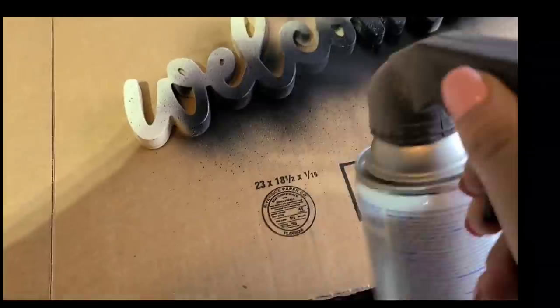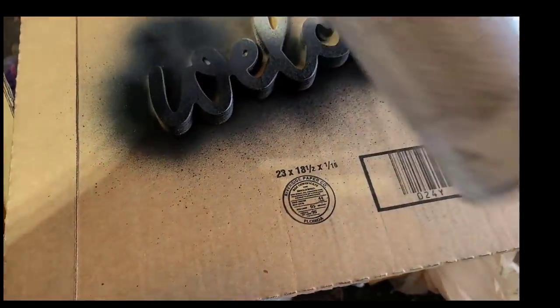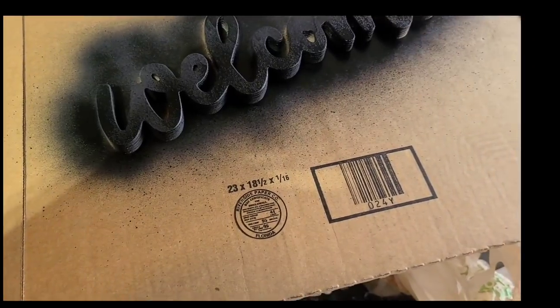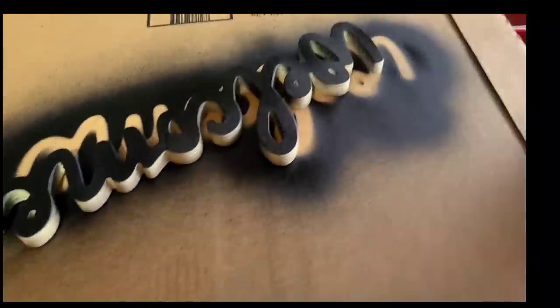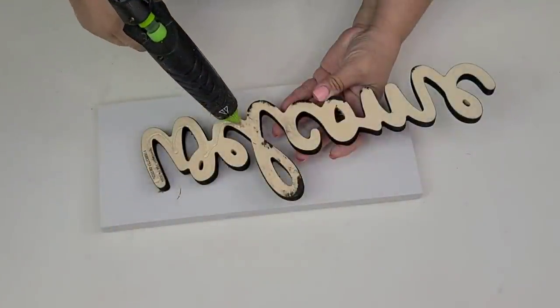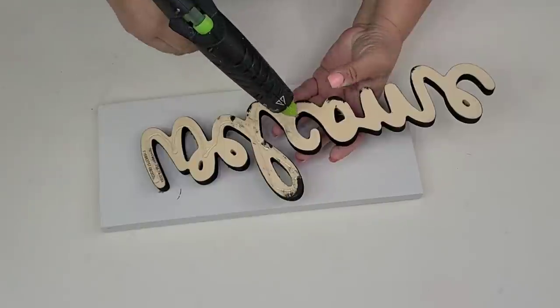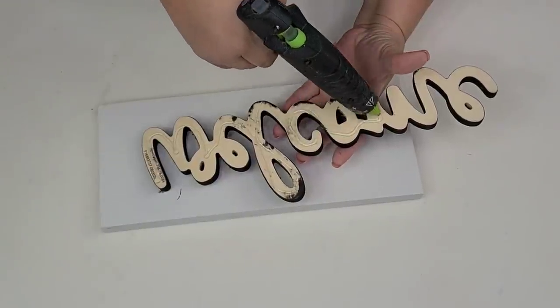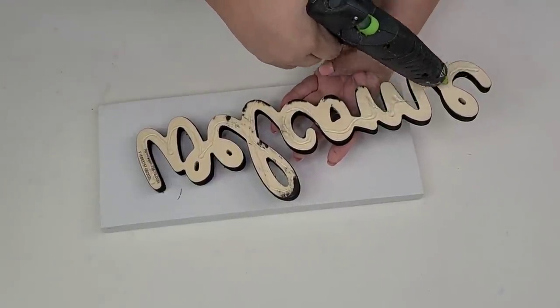This wooden welcome sign I got at the Target dollar spot for three dollars and I love how thick it is and just good quality it is. I'm going to give it one coat of this flat black from Rust-Oleum and let it fully dry. I am going to attach it to the board using hot glue and I'm going to place it kind of towards the top and a little bit tilted.